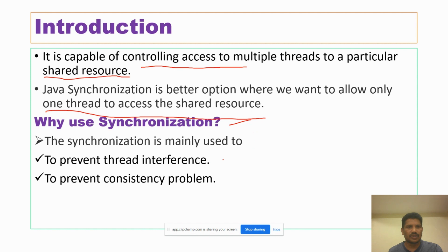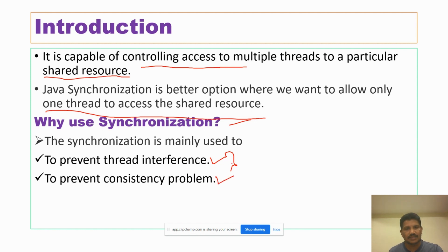Why use synchronization? Synchronization is mainly used for two purposes. The first one is to prevent thread interference. The second is to prevent consistency problems. Thread interference means if two or more threads access the shared resource at the same time, the data is not consistent.